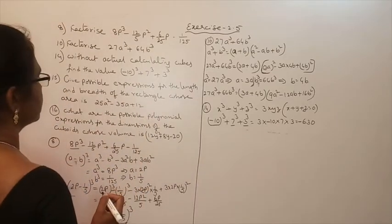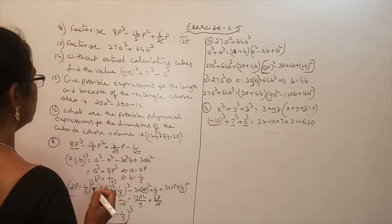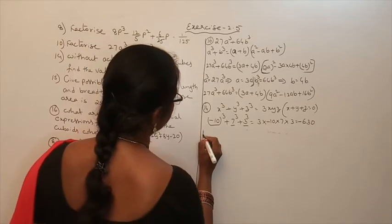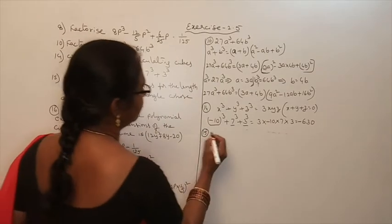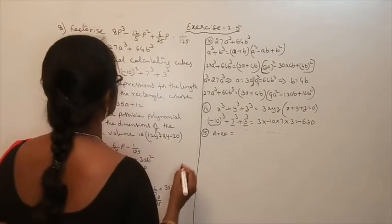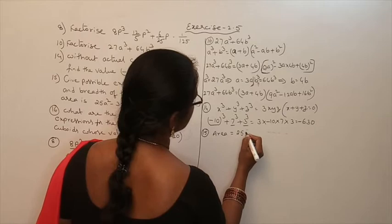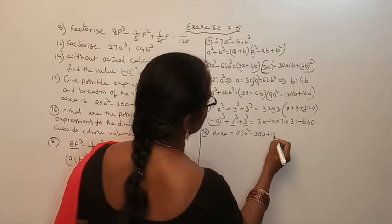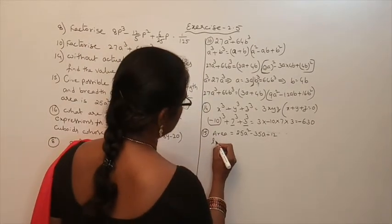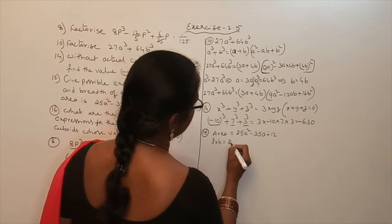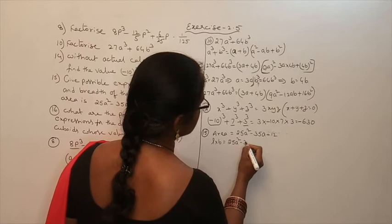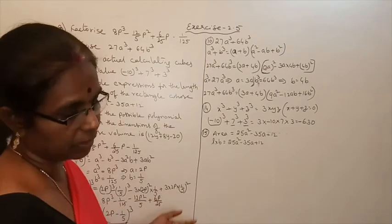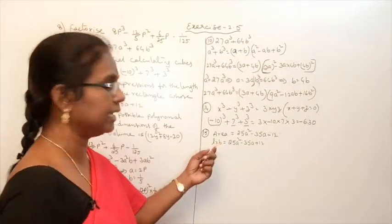Next: give possible expressions for the length and breadth of a rectangle whose area is 25a² minus 35a plus 12. Area equals length times breadth, so length times breadth equals 25a² minus 35a plus 12. If we find the factors of this quadratic polynomial, we will get two factors, and those two factors will be the length and breadth.